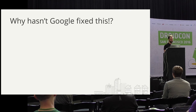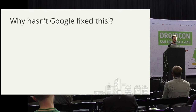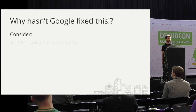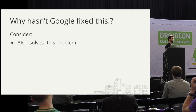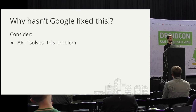I'm not affiliated with Google at all, so I can only give you some things to consider. The first thing is that ART kind of solves this problem — because we're going into native code, we don't really have this restriction. So potentially, as more market share comes with ART, this problem kind of fades away.